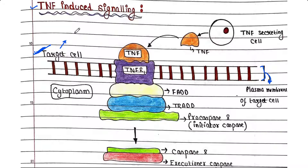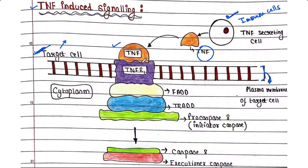This cell needs to undergo apoptosis. Another cell — an immune cell — can sense the stress of the target cell. The immune cell will secrete TNF, tumor necrosis factor. This TNF will bind to the target cell's plasma membrane, specifically to TNFR1, the tumor necrosis factor receptor 1.